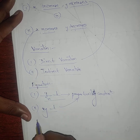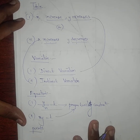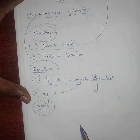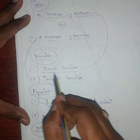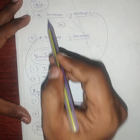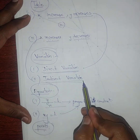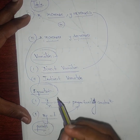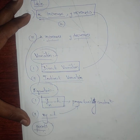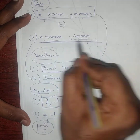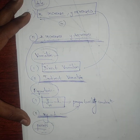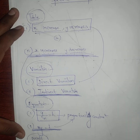We have four subdivisions: first is the table, second is the variation, third is the equation, fourth is the points. For direct variation, y by x equals k and we note the points. For indirect variation, x times y equals k and we note the points. Now we are going to start exercise 3.15.